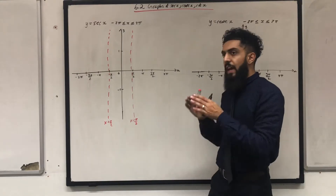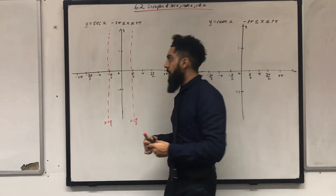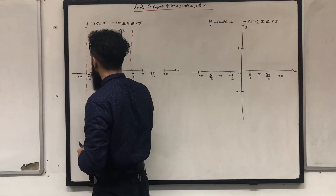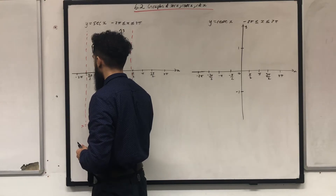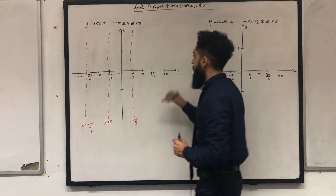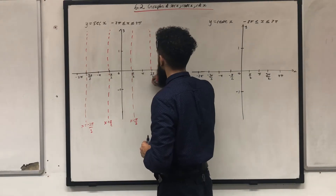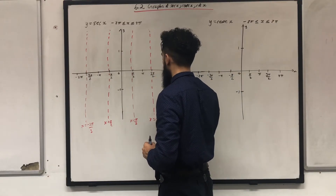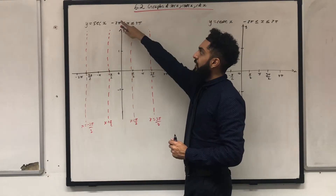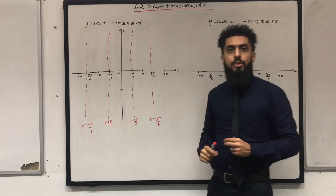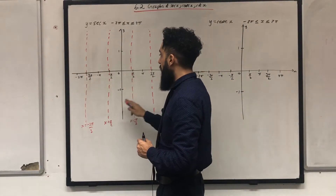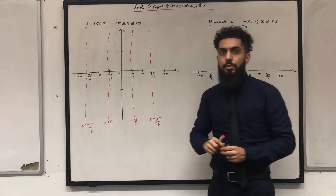You then sketch the next two asymptotes at x = -3π/2 and x = 3π/2. So in the interval -2π ≤ x ≤ 2π, you have 4 different asymptotes.